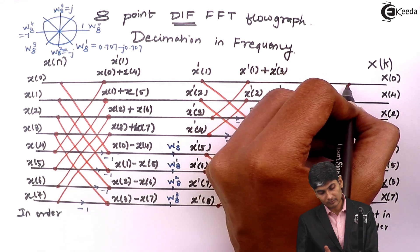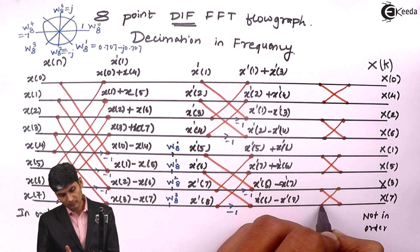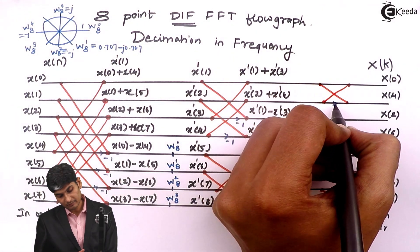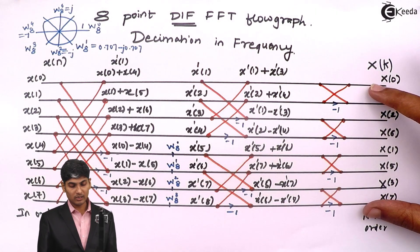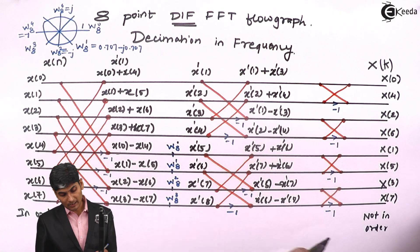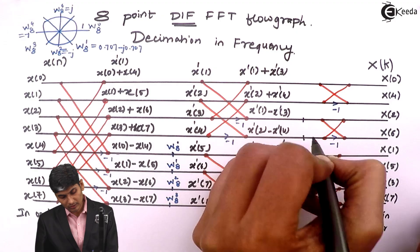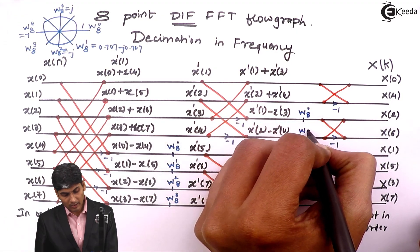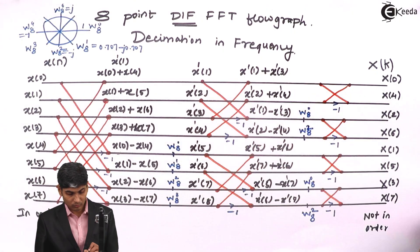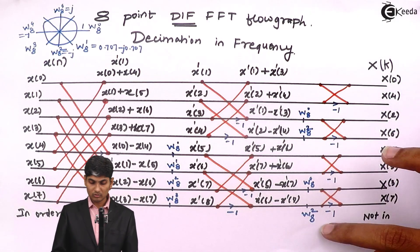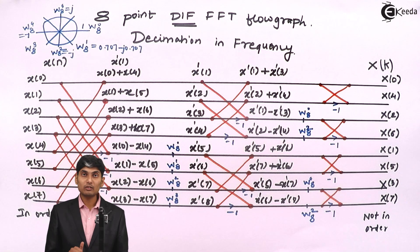The third and final stage contains the smallest crisscrosses, between just two lines each. Before entering the third stage, we again have multipliers on the last two lines of each pair: W8^0 and W8^2 for each group. The final outputs come out as X(0), X(4), X(2), X(6), and so on.